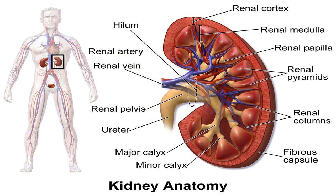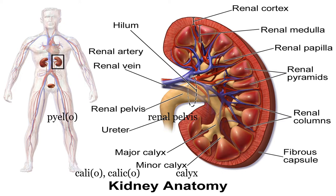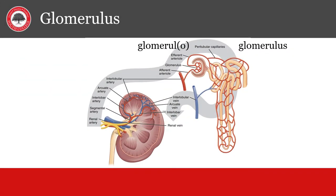A couple more combining terms: pyelo refers to the renal pelvis, and calico refers to the calyces, which are important parts of the kidney. You will learn about kidney anatomy more in anatomy and physiology two. The glomerulus is where filtration and reabsorption take place. Glomerulo refers to the glomerulus, and the kidney has roughly one million glomeruli.